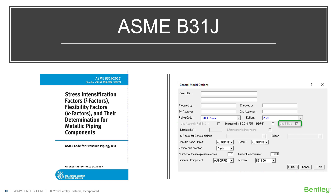B31J is currently mentioned in the B31-1 and B31-3 piping codes, so it's available to use in AutoPipe for these two codes, editions 2012 and later. It's actually required for the latest B31-1 and B31-3 2020 piping codes. So if you use either of these in your piping model, you'll see this option automatically checked and grayed out, as shown here on the right. When checked, AutoPipe evaluates your model in accordance with ASME B31J 2017.